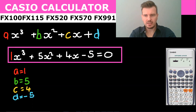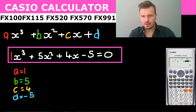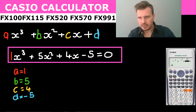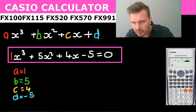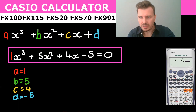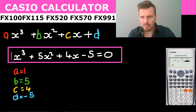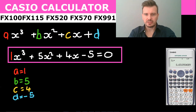Then I simply type in my a which is 1, press equals. Then my b is 4, equals; my c is 4, equals; and my d is minus 5, equals. And I press equals again to get my first x value.